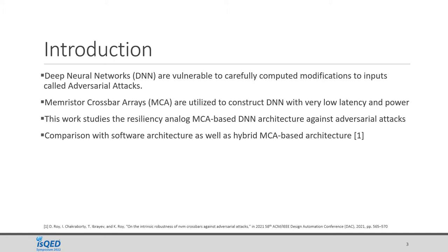MCAs are used to perform multiplications and additions, which are the main components of any deep neural network. MCAs have the advantage of very low latency and small power and area requirements over conventional hardware. In this work, we study the resiliency of analog memristor crossbar array based deep neural network architectures against adversarial attacks, and compare resiliency with software architectures as well as a recently proposed hybrid MCA based architecture, which has been shown to exhibit some resiliency against adversarial attacks.